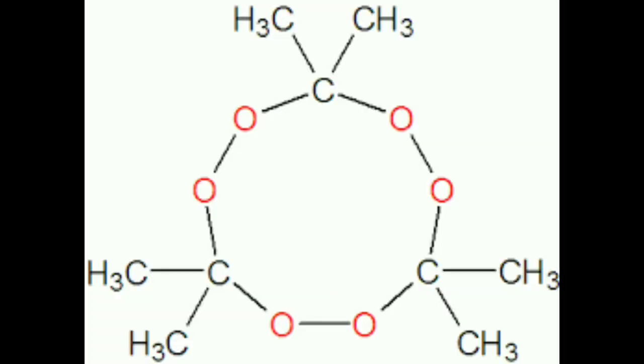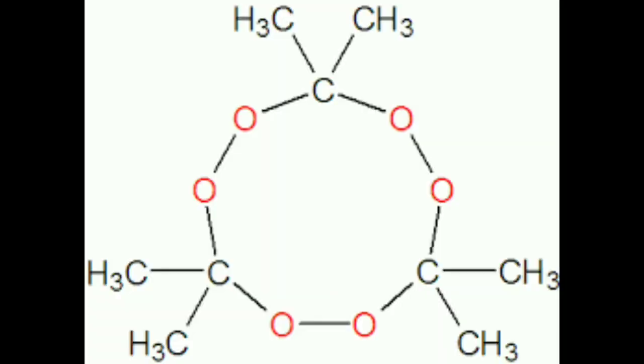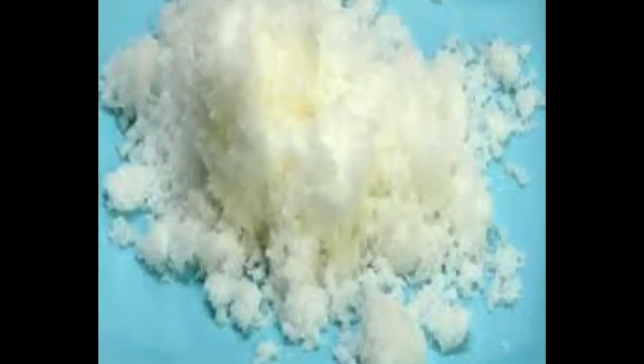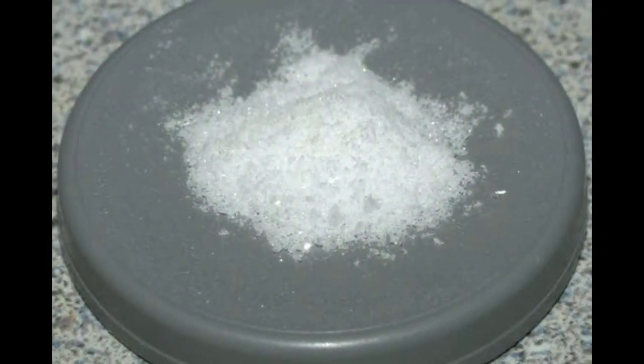Number 4 is TATP. This is a peroxide compound. It is unstable with oxygen and is more powerful than TNT. It is a very spontaneous substance.